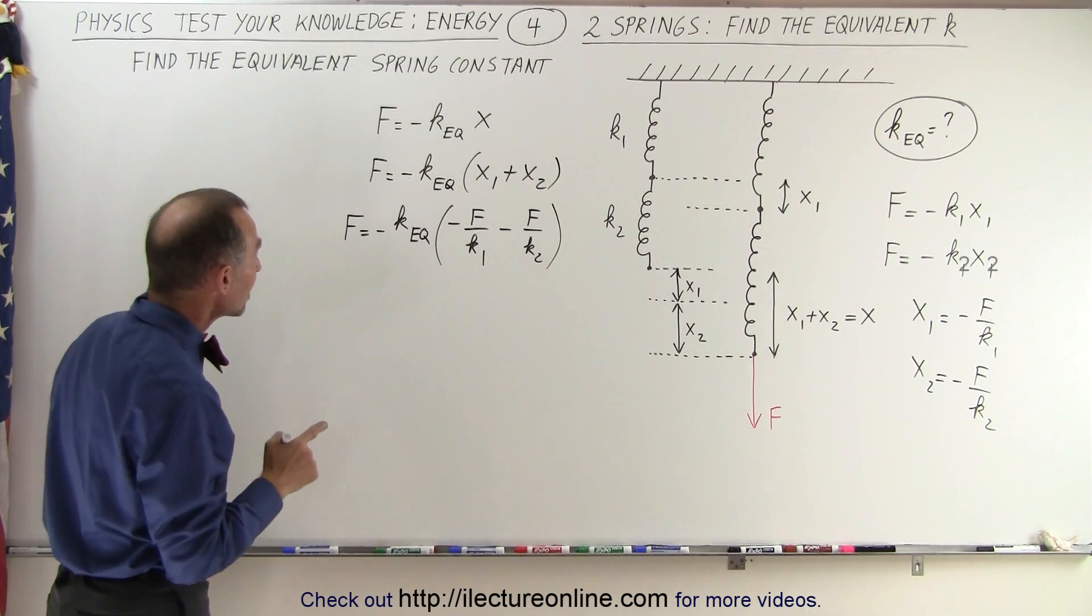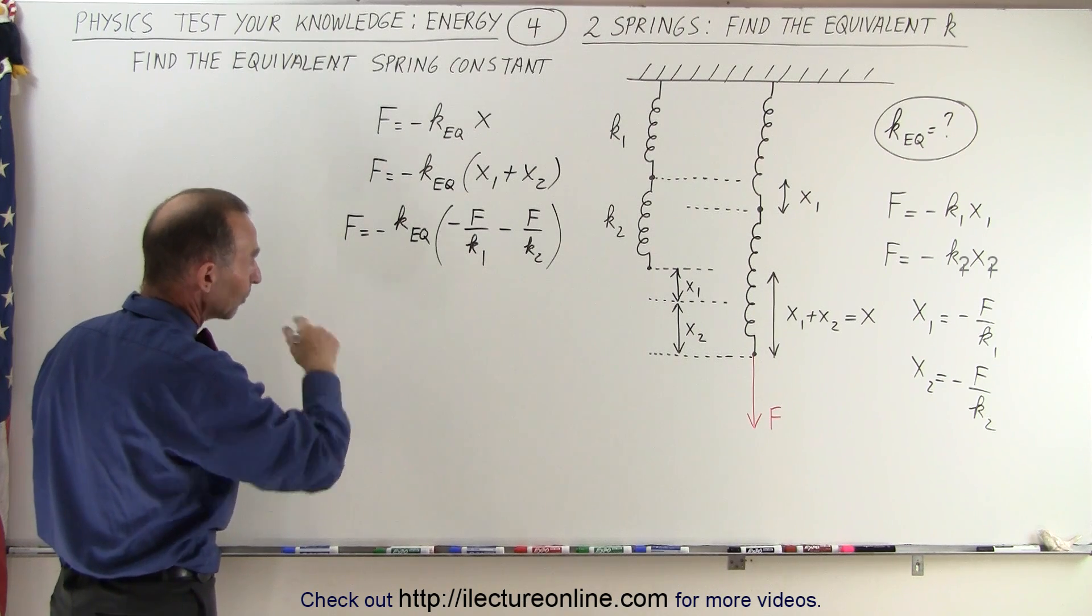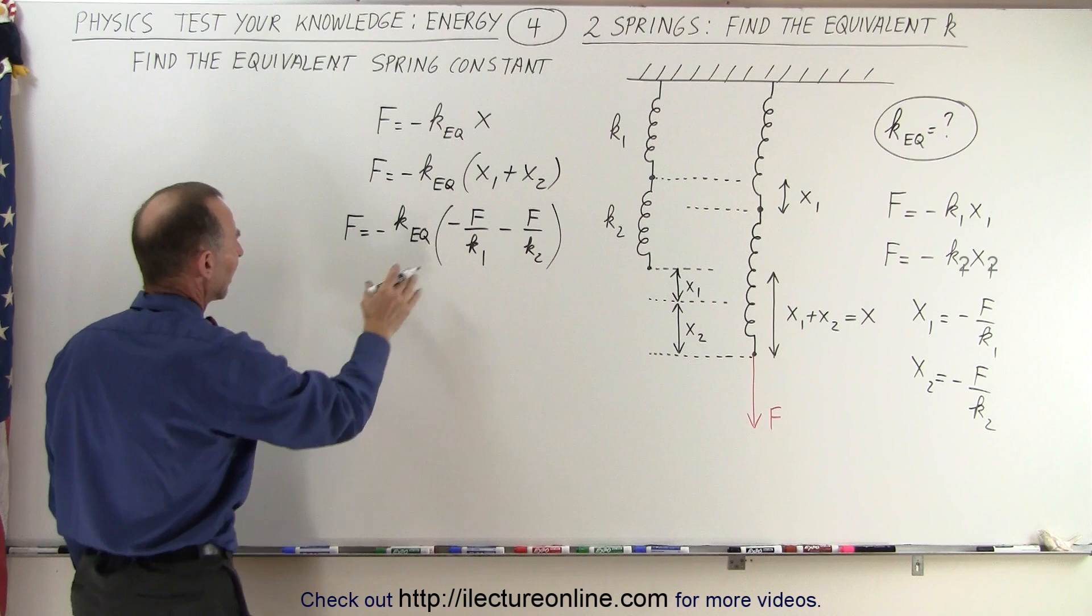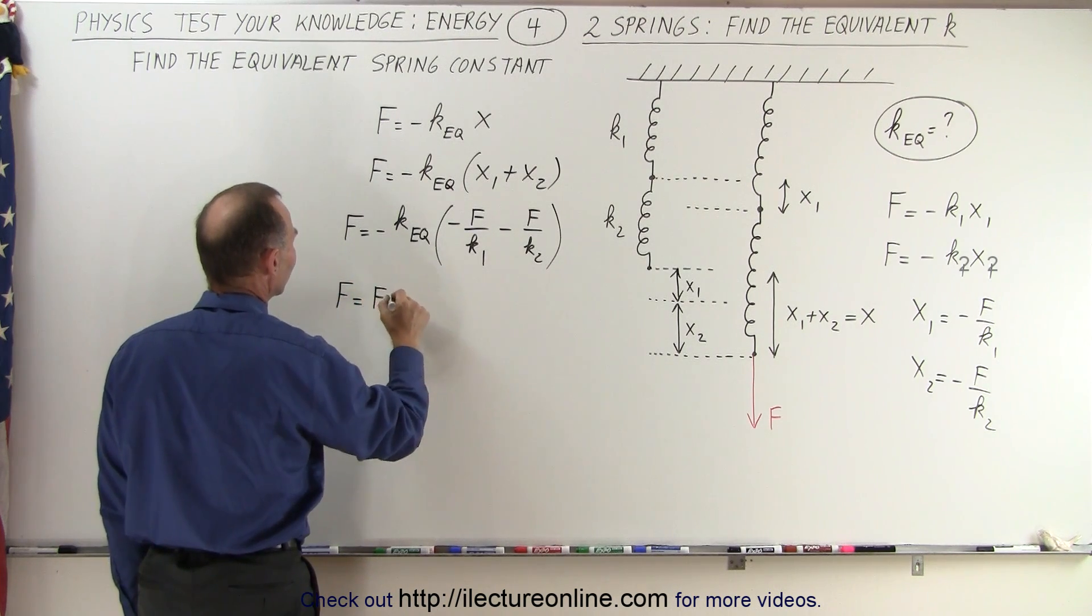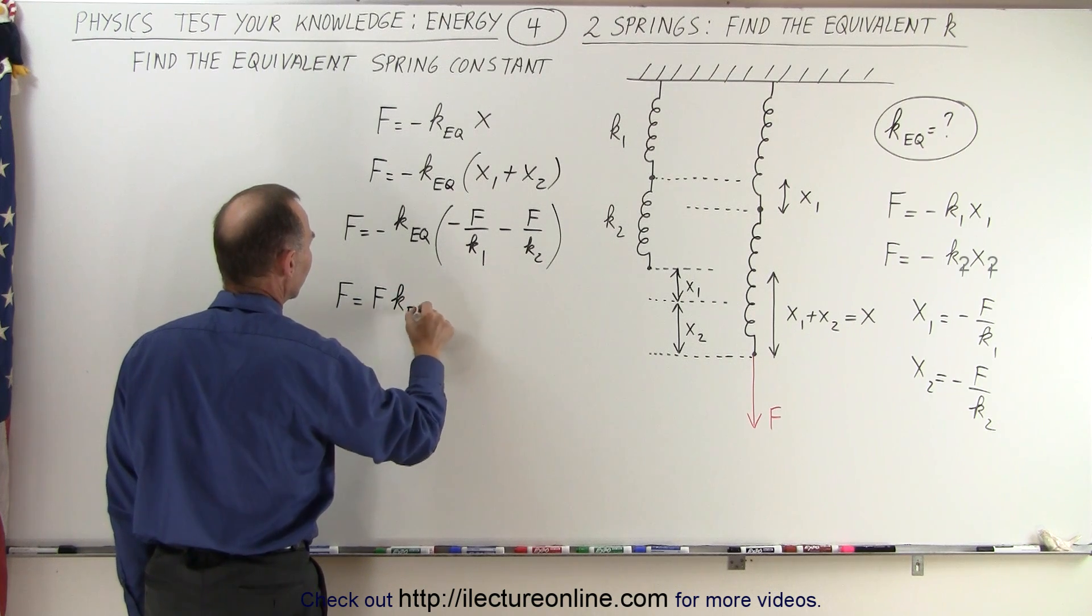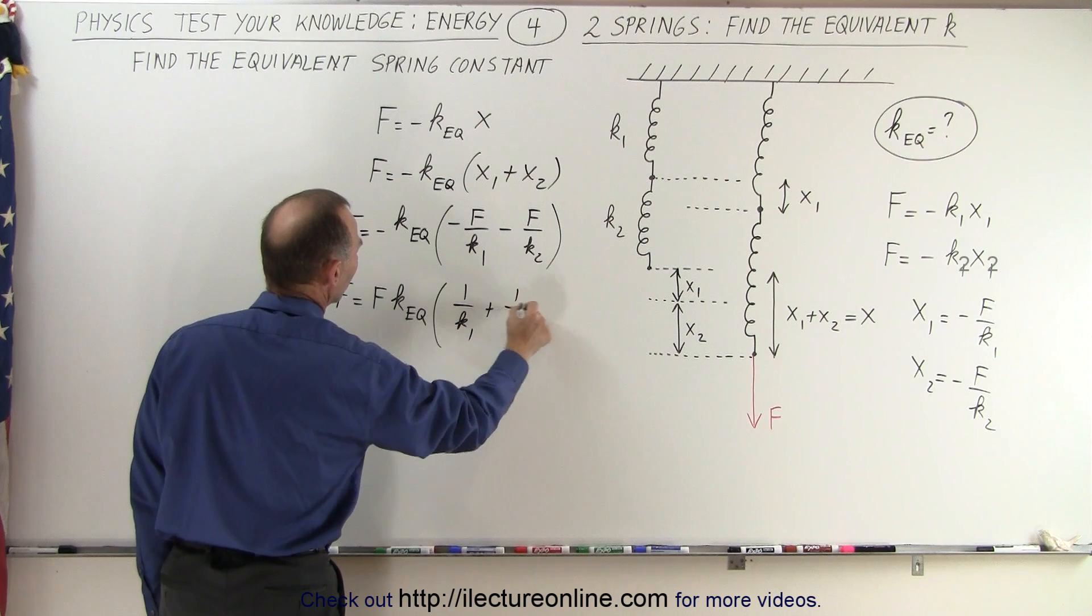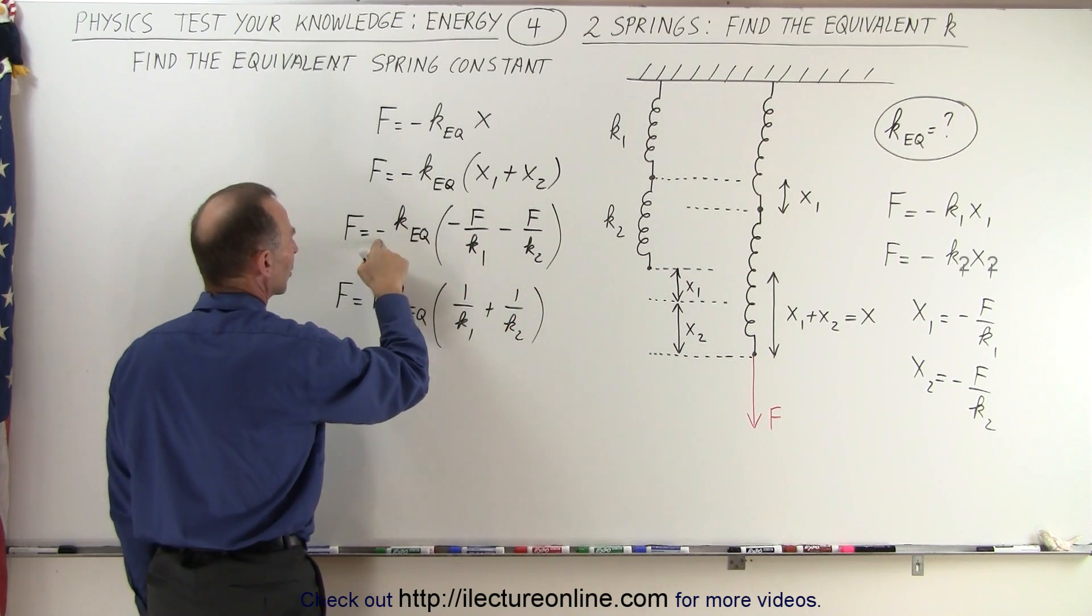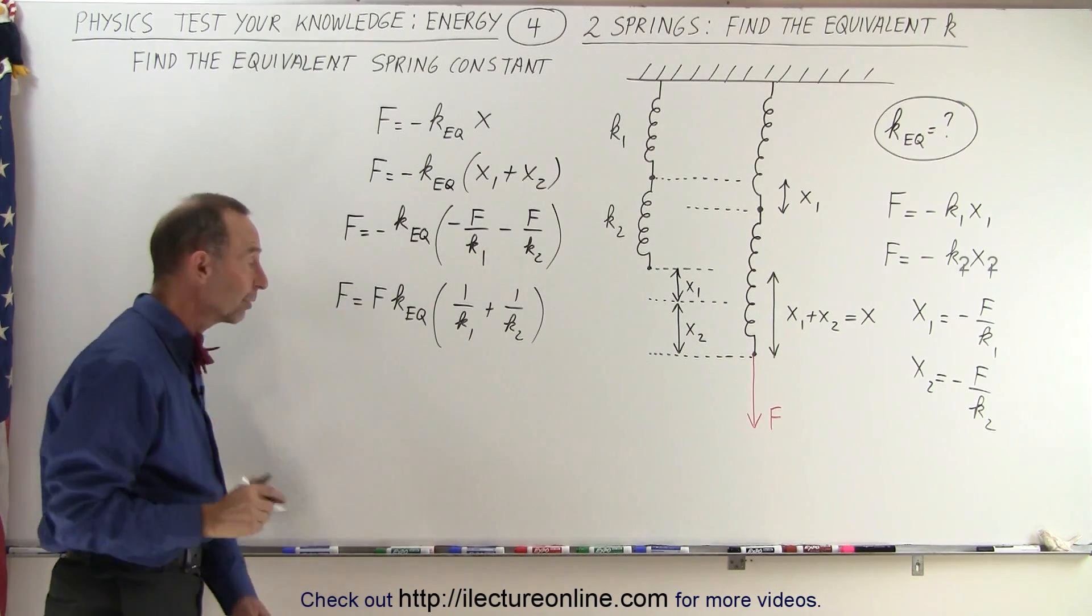Now what we can see here is that on the left we have an f, on the right we have an f on both terms, we can factor out the negative f and multiply it times the negative here, so we can say that F is equal to f times k equivalent times 1 over k1 plus 1 over k2. So what we've eliminated is we factor out the negative and multiply it times this, and we factor out the f, so we have 1 over k1 plus 1 over k2.